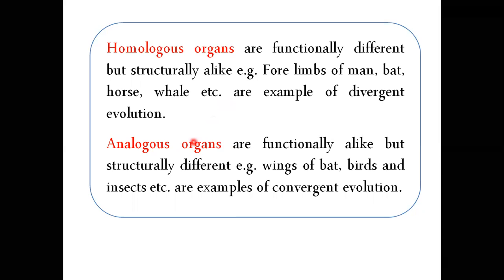Analogous organs are functionally alike but structurally different — different in origin and anatomy, but performing the same function. For example, wings of birds and wings of insects — these different animal groups have wings that serve the same function, but their origin and structure are different. This is convergent evolution — where anatomically different structures begin to perform the same function.